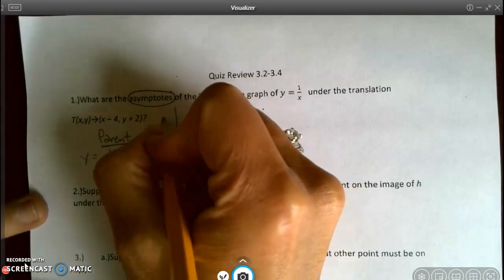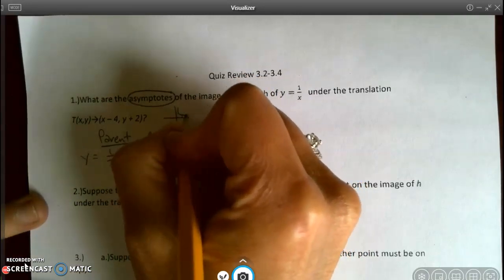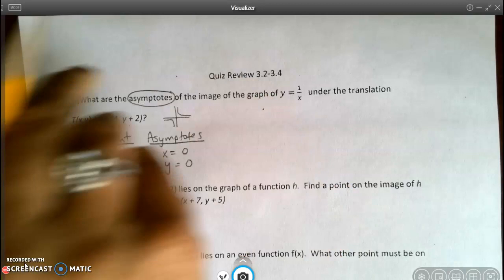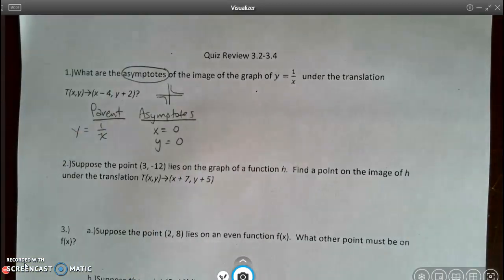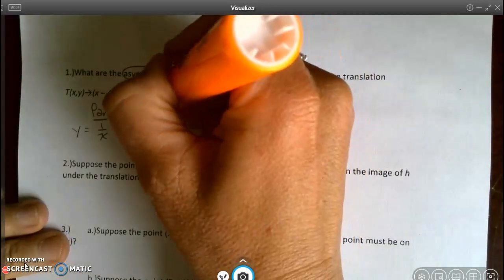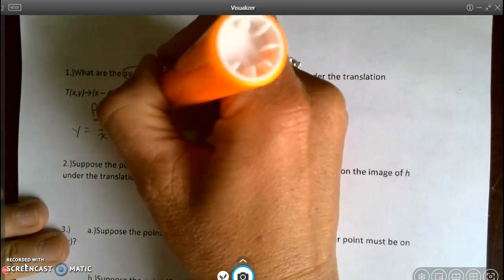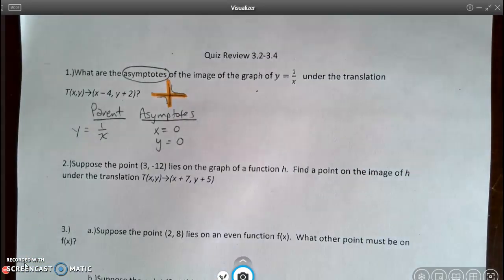I remember that this graph looks like this, where my asymptotes are this line here, x equals 0, and this line here, where y equals 0.